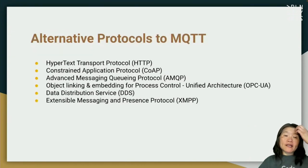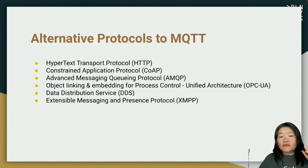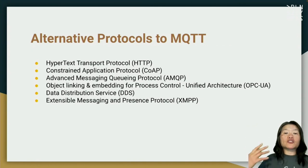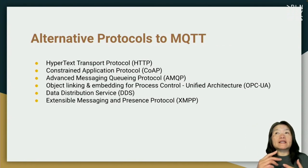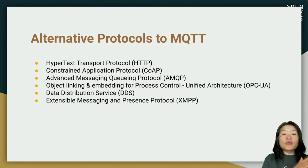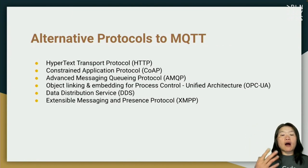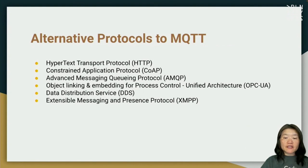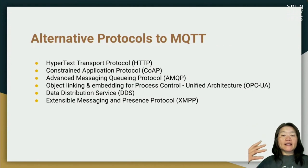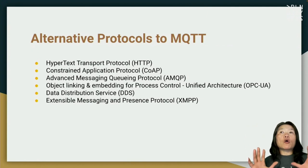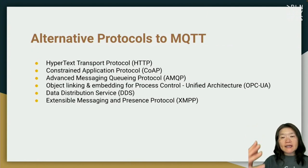Alternative protocols to MQTT: HTTP is an option but it's a stateless protocol that doesn't scale as well asynchronously. CoAP (Constrained Application Protocol) runs on UDP rather than TCP/IP, so it has less reliable built-in mechanisms. AMQP (used by RabbitMQ) is another option. For industrial factory use there's OPC UA (Object Linking and Embedding for Process Control, Unified Architecture), DDS (Data Distribution Service), and XMPP — an XML-based extensible messaging and presence protocol more catered for chat-type applications.